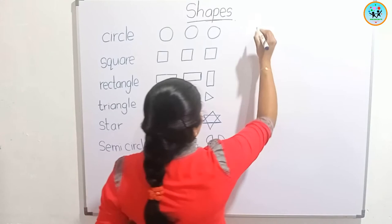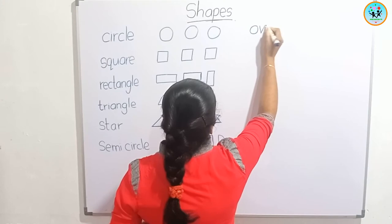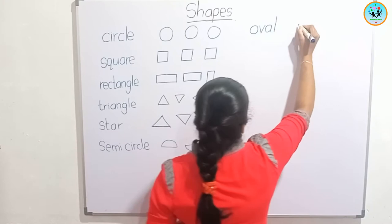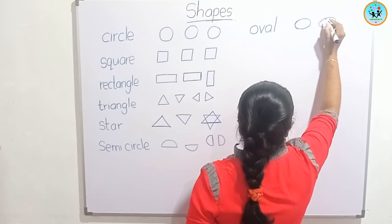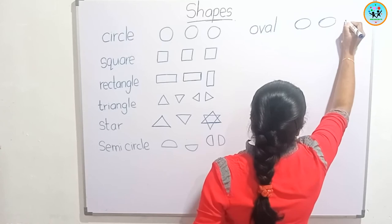Let's draw oval. It's very easy — it's like an egg. You know an egg? It's like an egg. Oval.